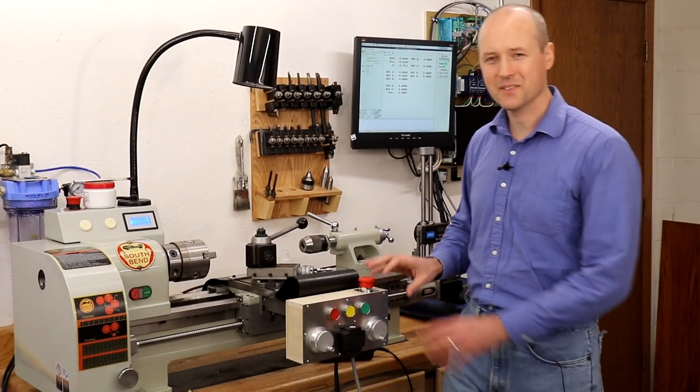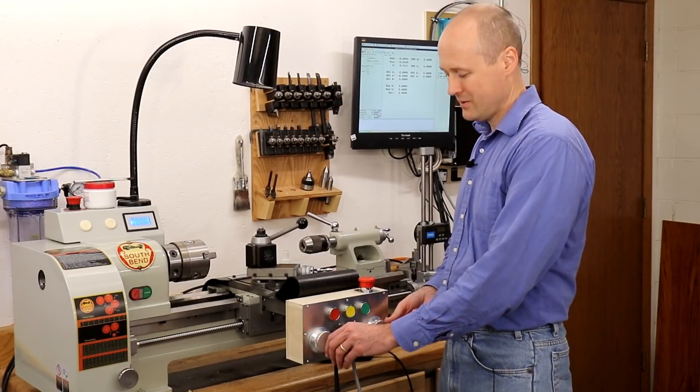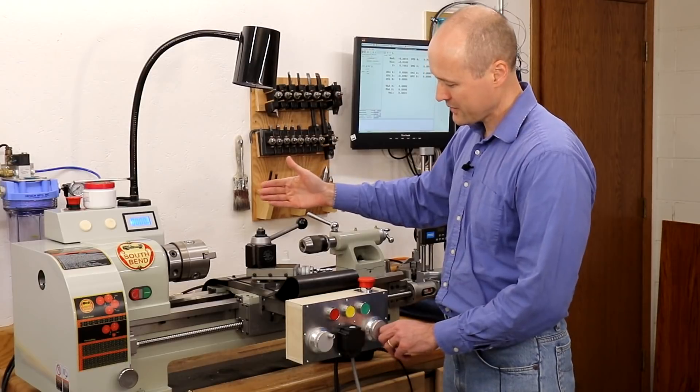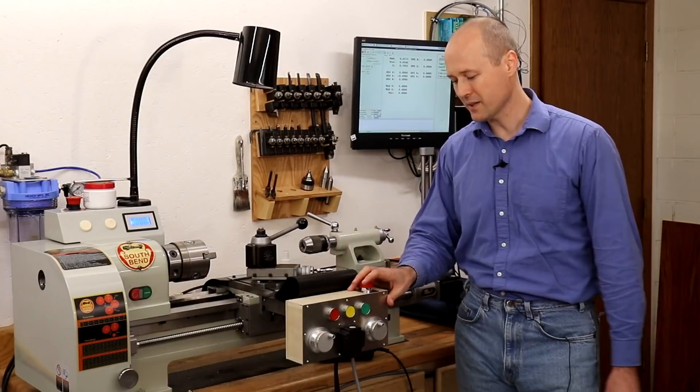The interesting feature I think of this control box are these two MPG wheels. So this one controls the longitudinal feed while this one controls the cross feed, very similar to the manual wheels that were originally on here.